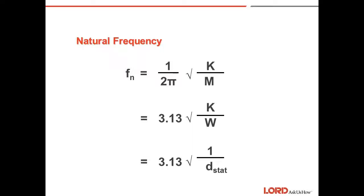For convenience, the equation for natural frequency can be written in many different forms, including natural frequency is equal to 3.13 times the square root of k over w. When k is given in terms of pounds per inch, that's the spring rate, and w is in pounds, the frequency will be in hertz.